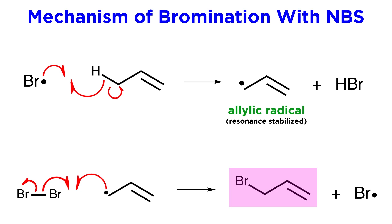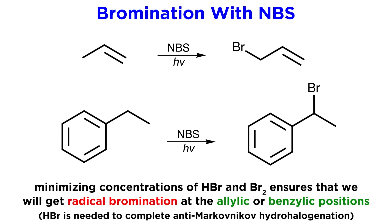We have successfully brominated at the allylic position, and this will continue until all the NBS has been consumed. So the major key to this reaction is keeping species that would react with the pi bond to a minimal concentration, like hydrobromic acid and molecular bromine. This way there is ample time for homolysis to occur, and radical chemistry to ensue.